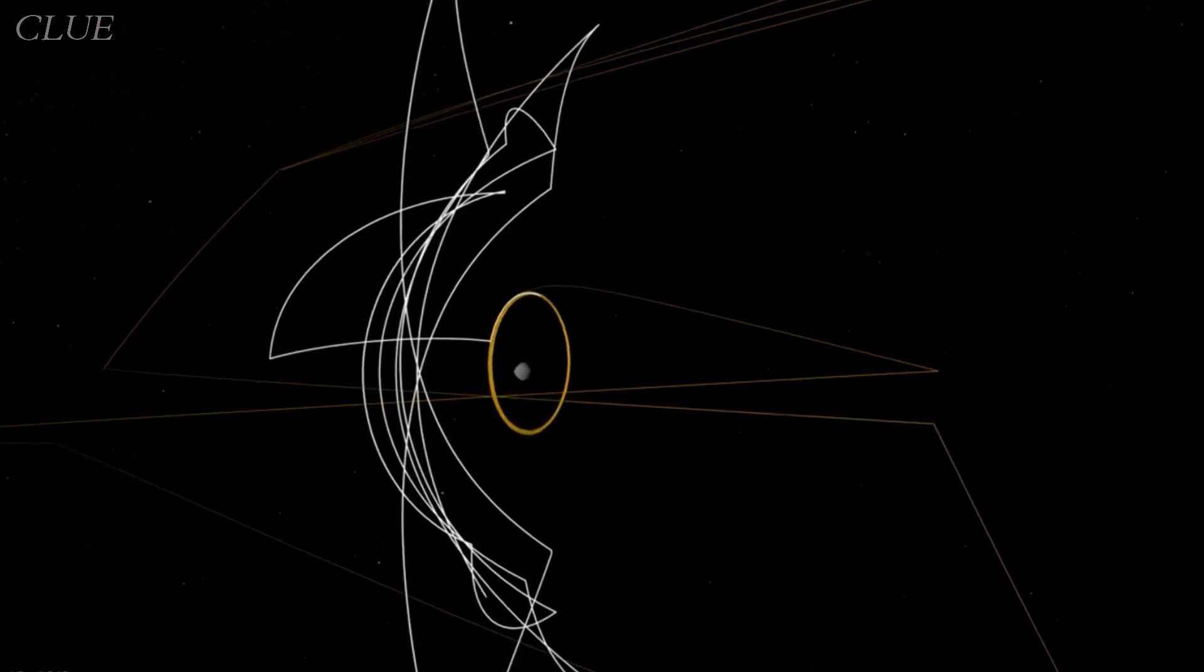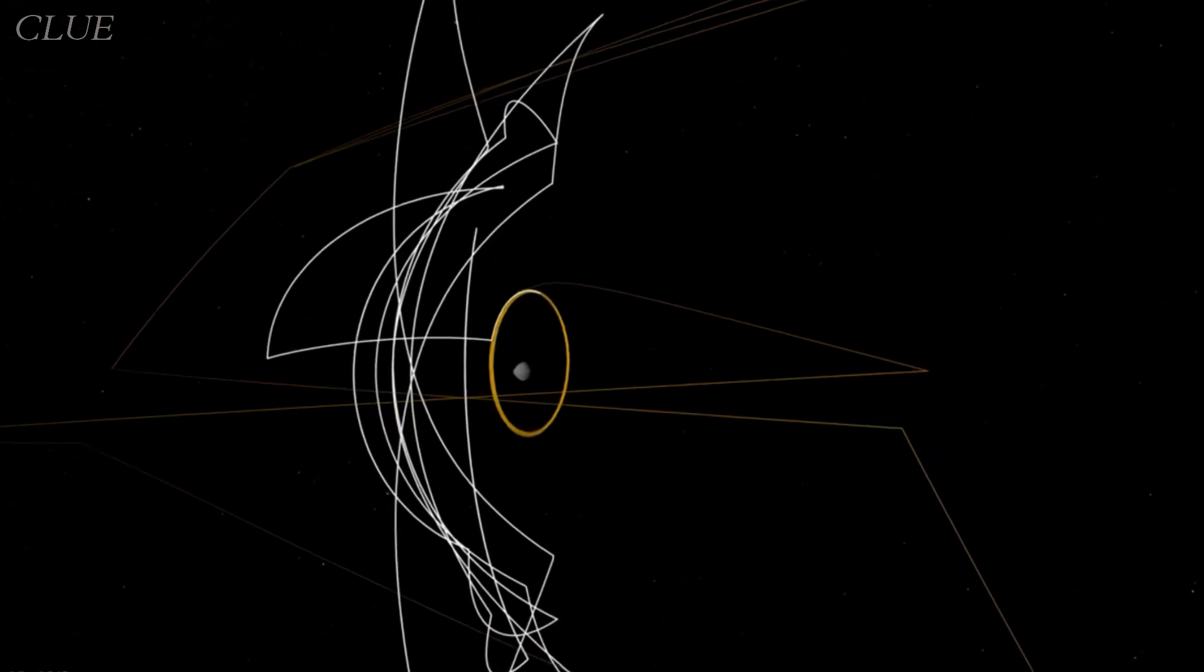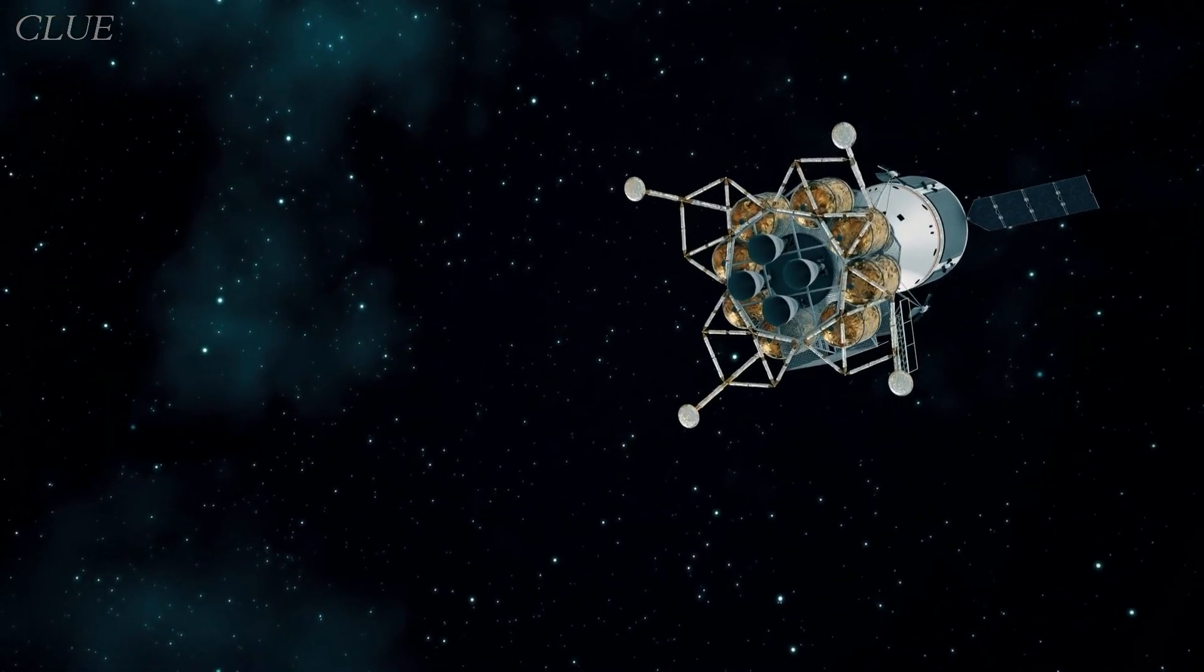OSIRIS-REx entered orbit around Bennu on December 31, 2018, at a close distance of about 1.75 kilometers.